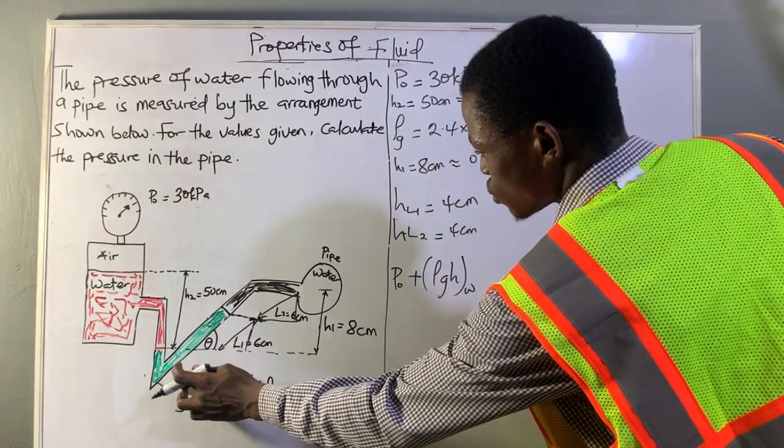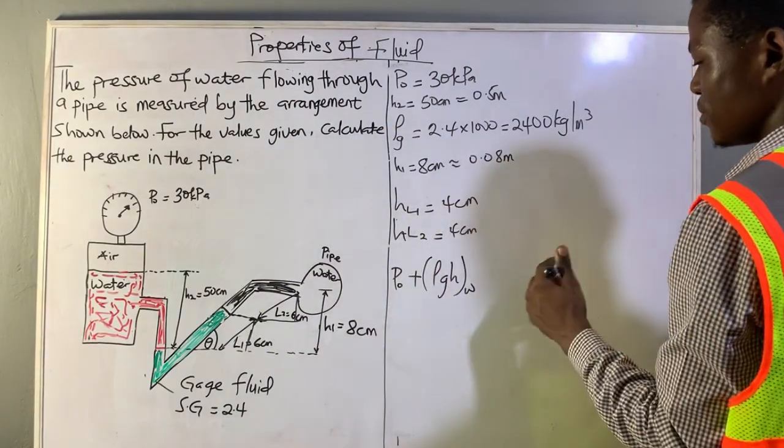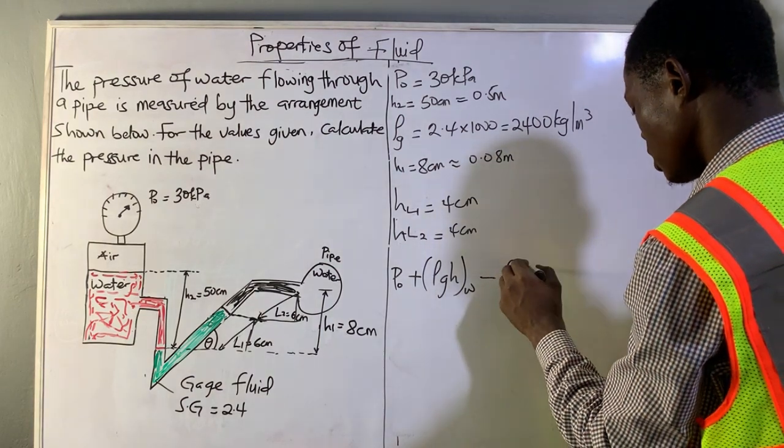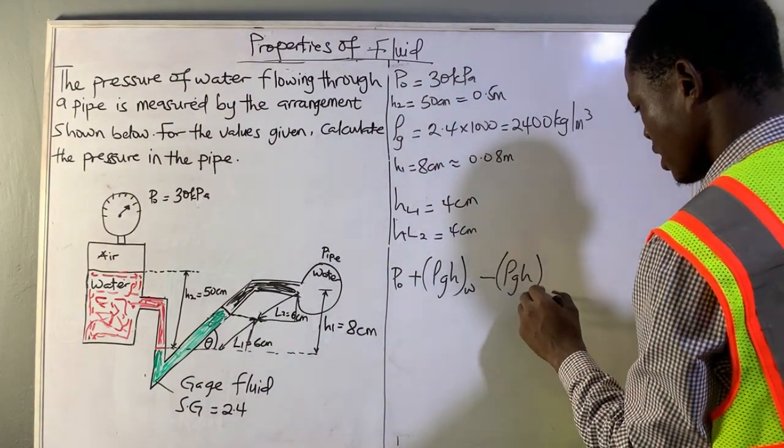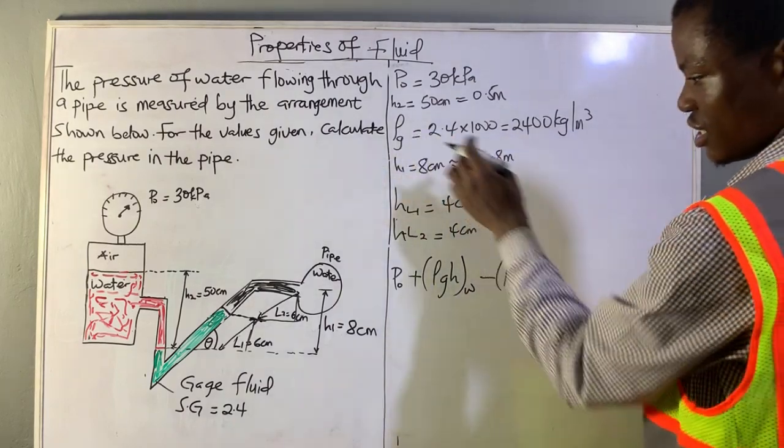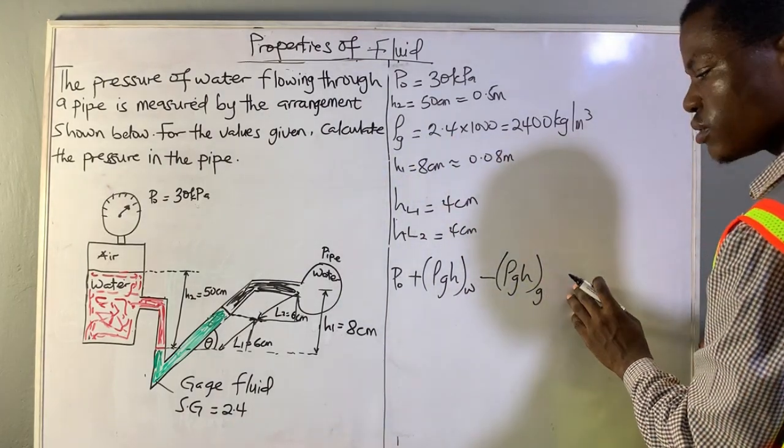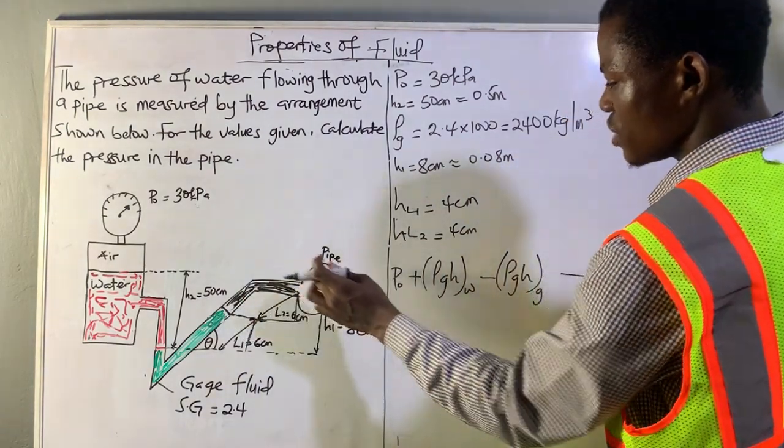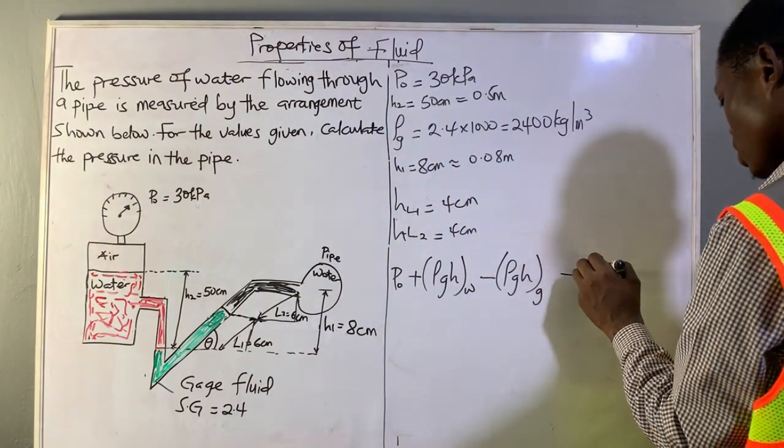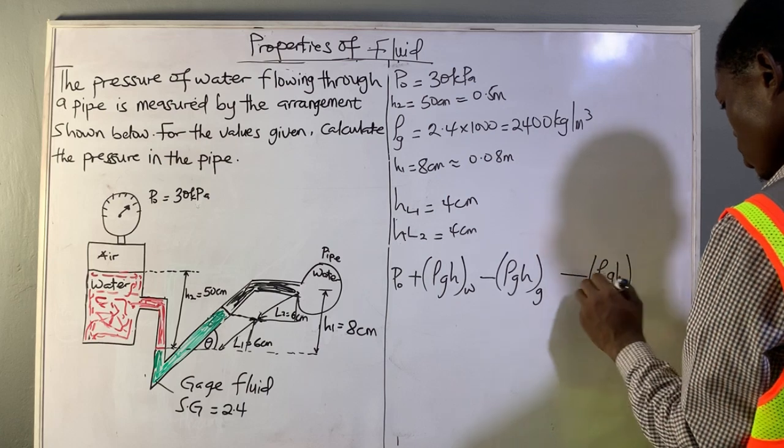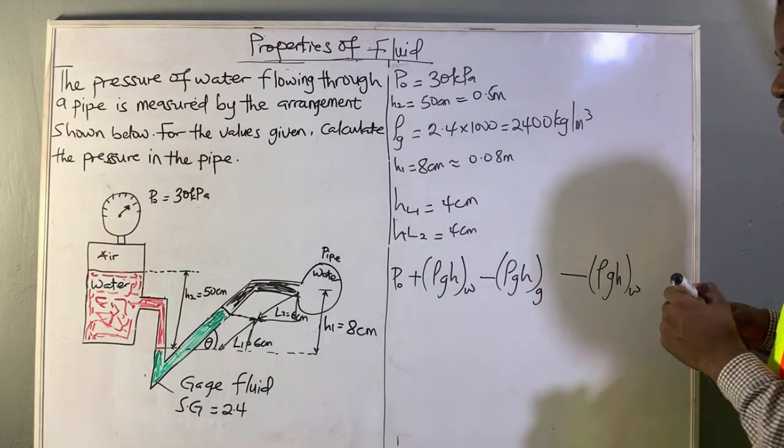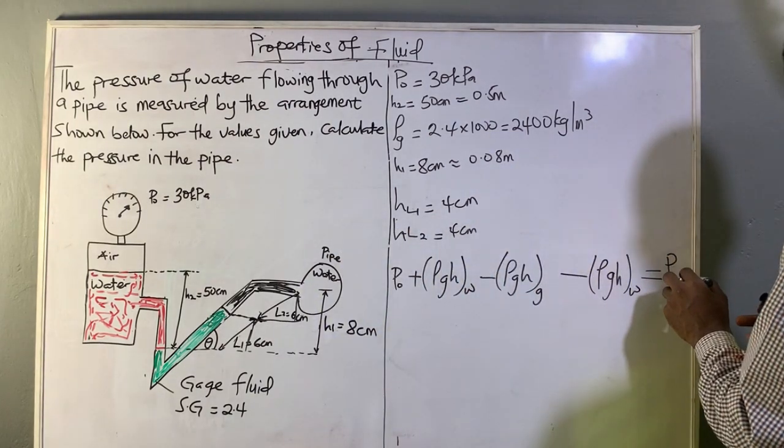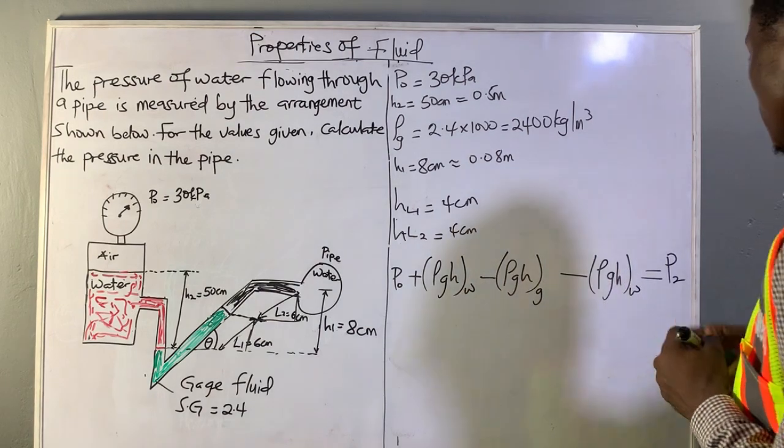And since this one is going up, it's elevating, it will be negative. So that will be minus rho G H of the gauge. Minus also this is moving up, so minus rho G H of another water, which would be equal to the pressure in the pipe. Let's name it as P2 or P1.